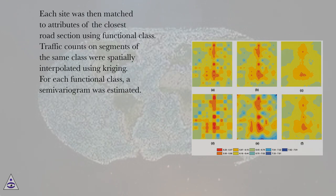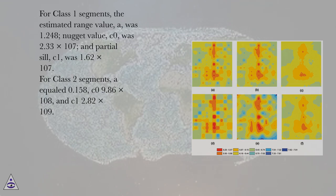Each site was then matched to attributes of the closest road section using functional class. Traffic counts on segments of the same class were spatially interpolated using Kriging. For each functional class, a semivariogram was estimated.